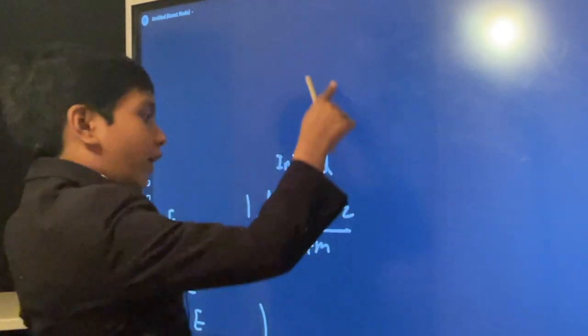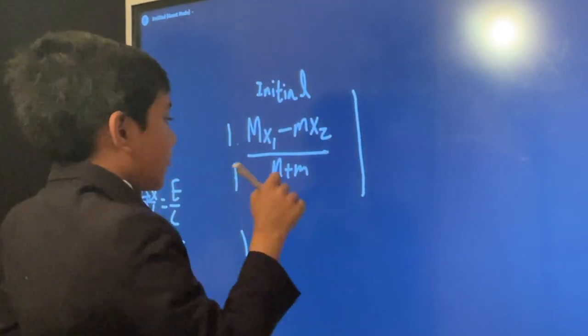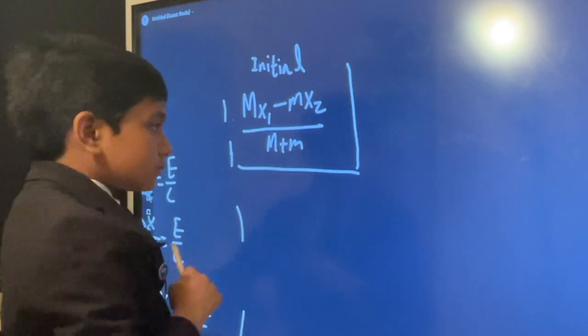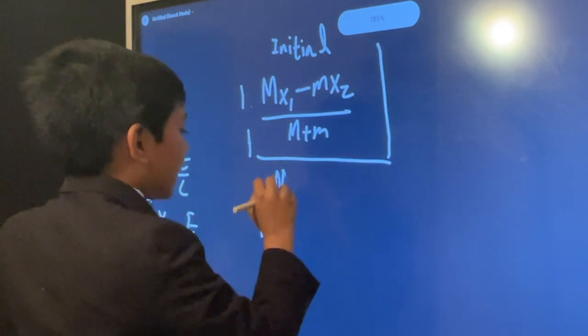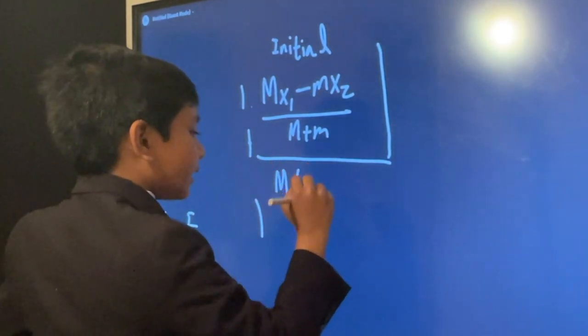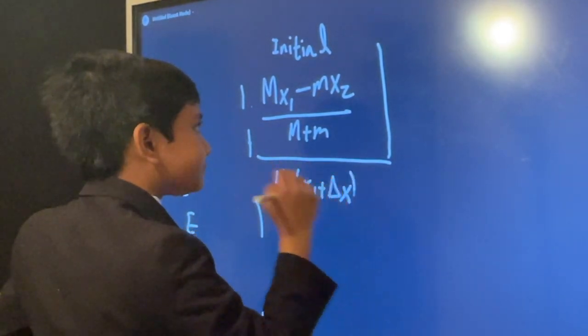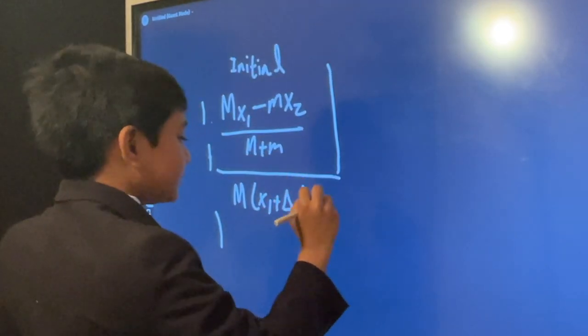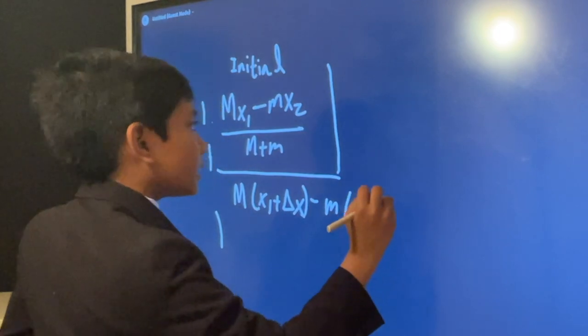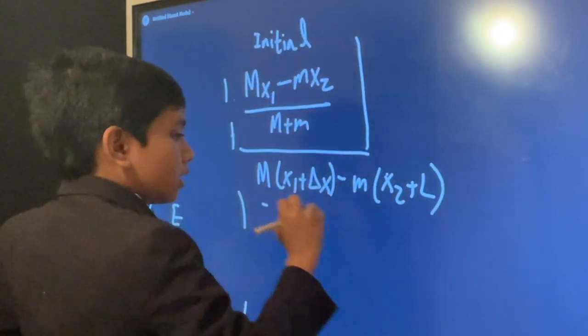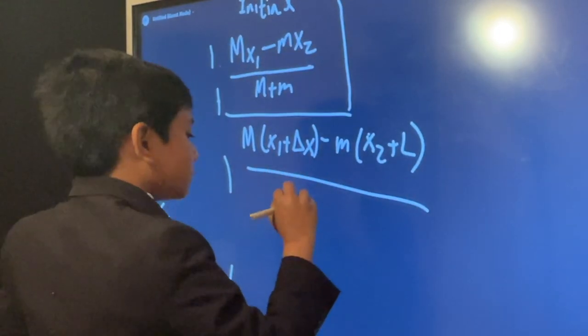But what about the final center of mass? Well, the only thing that changes is the position. And so that gets us M. The position of the container has changed by delta X. Minus M, the position of the light has changed by L. So X2 plus L. Divide that by M plus M.